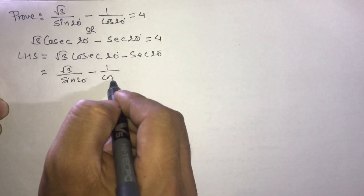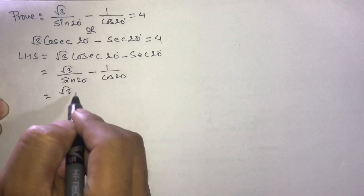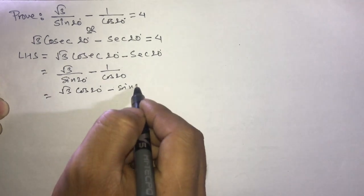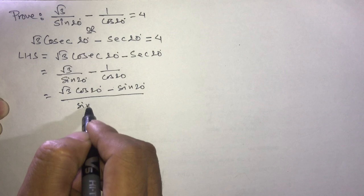Now taking LCM: root 3 cos 20 degree minus sine 20 degree, all divided by sine 20 degree into cos 20 degree.